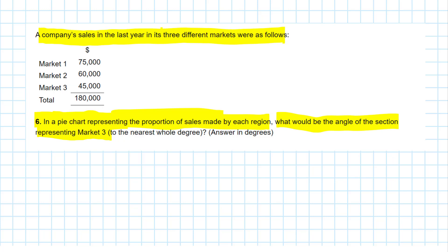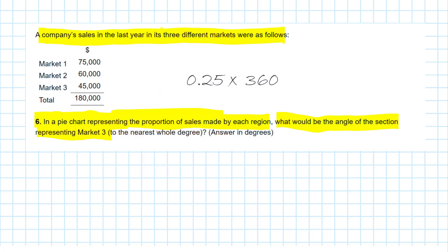We know that market three is 25% of the total sales. And then 25% of 360 degrees would be 90 degrees — the answer we are looking for.